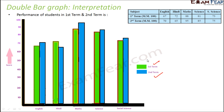How do we interpret this double bar graph? If we ask which subjects show improvement from first term to second term — meaning first term performance was less than second term — we compare the two bars. Wherever the green bar is smaller than the blue bar, performance has improved. In English, the green bar is smaller than the blue bar, so performance improved. The same is true for maths, science, and social science — performance improved in all four subjects. Whereas in Hindi, the performance has deteriorated from first term to second term.